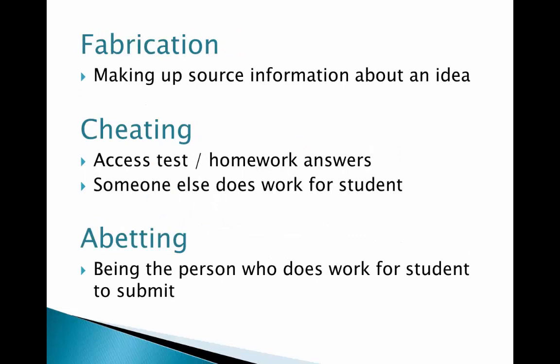The other forms of academic dishonesty are just as problematic as plagiarism. Fabrication is simply making up citation information and using that false information in your citation — even in the correct format, the citation is not valid. Cheating usually refers to having answers or other information for a test, or having someone else do your coursework for you. This is different from working in study groups or getting help from a friend, because in those cases you are doing the work, although you need help to understand the material. Abetting is helping anyone in any form of academic dishonesty, and will receive the same disciplinary action as the person who submitted the work.